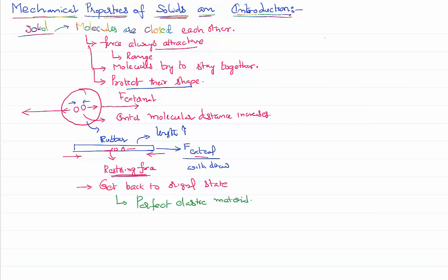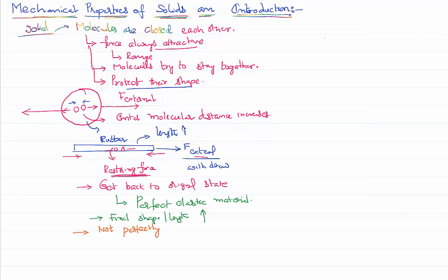But if you look at the rubber more carefully, you notice the rubber has not acquired its original shape — the final length is slightly increased compared to the original length. This happens because the restoring force fails to bring the molecules back to their original positions one hundred percent. The molecules are not perfectly elastic — if they were perfectly elastic they would return to their original positions completely. In practice there is a slight increase in intermolecular distance, so the solid is also not totally perfectly elastic, meaning there is a change in shape.